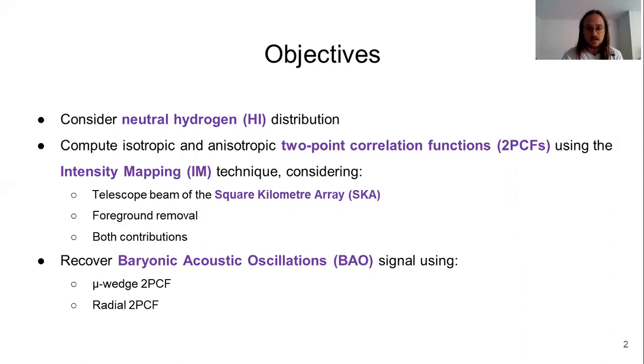Also, SKA is the abbreviation for Square Kilometre Array, a radio telescope which is now in construction that will be capable to trace the neutral hydrogen at very high redshifts.